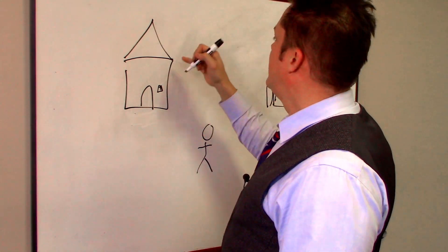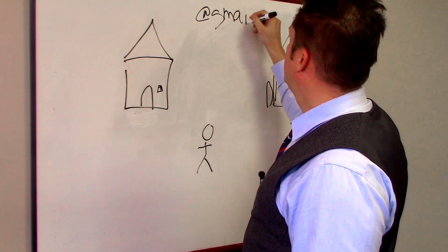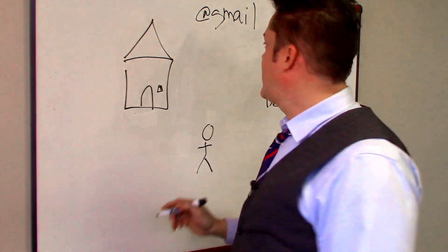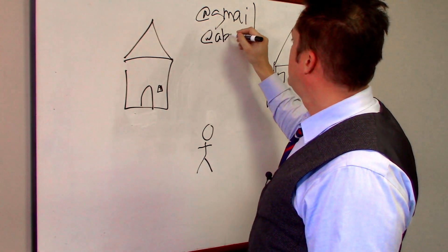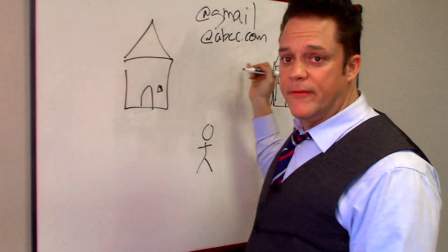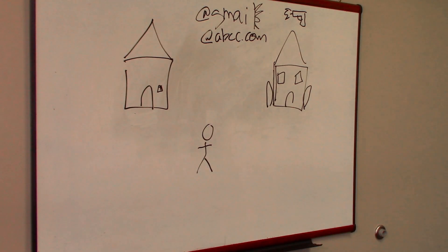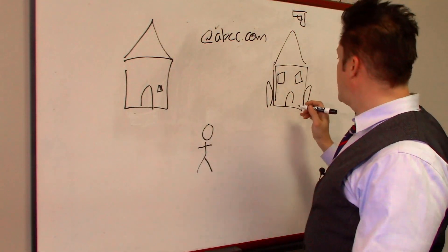This guy over here has a Gmail account, and this guy over here has an at ABCconsulting.com which matches his URL of his website. So as you can see, this guy is gone and this guy gets like another colonnade.